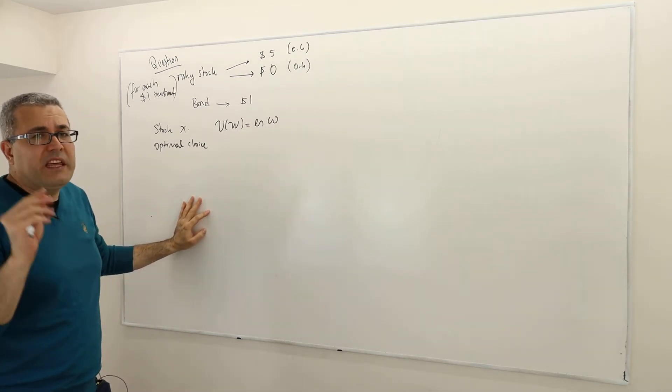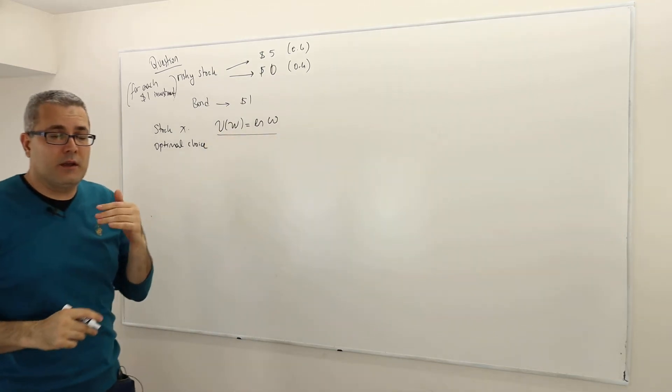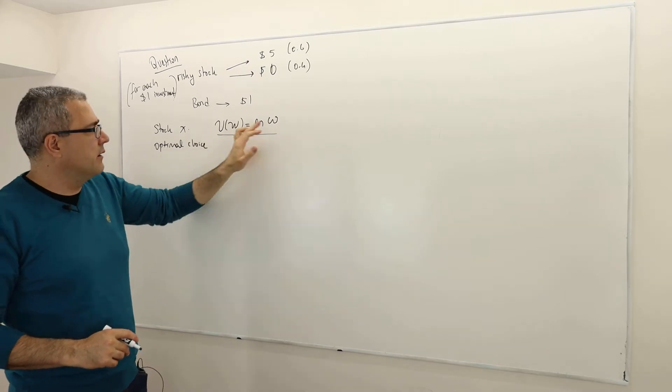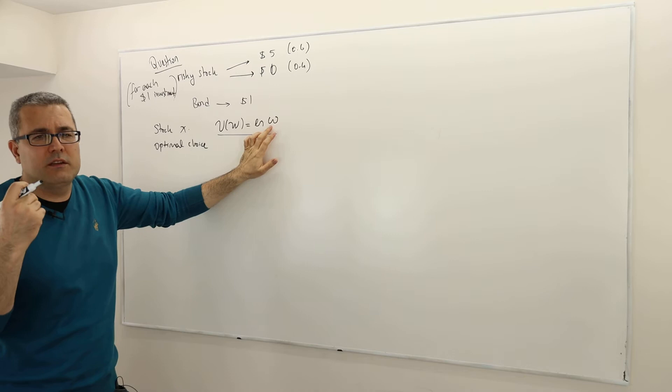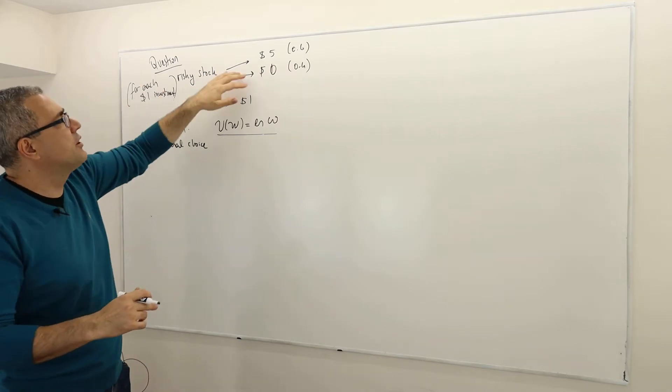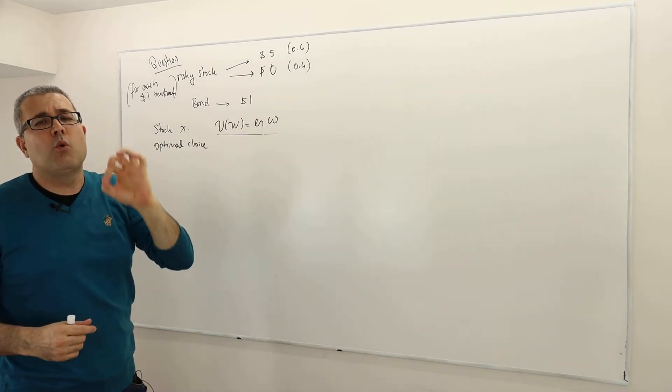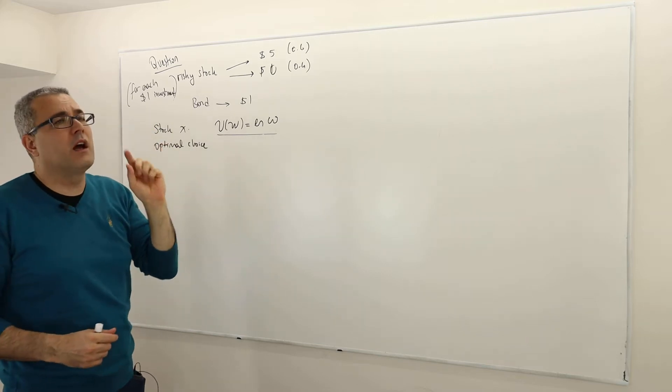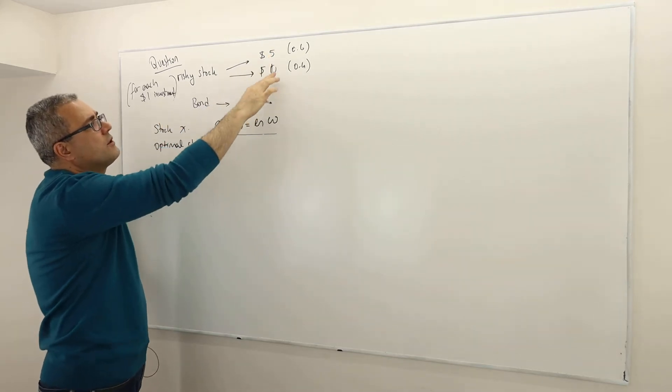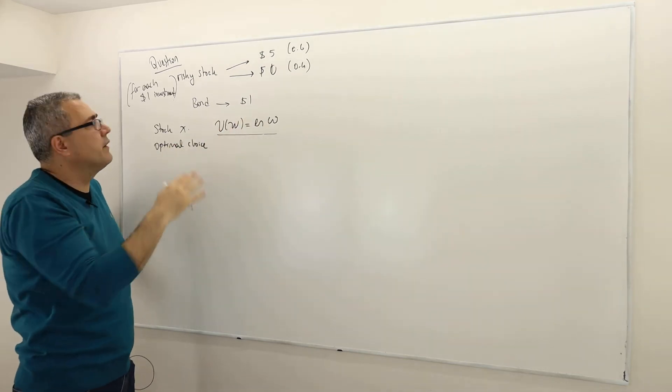So be careful. What we care about is the decision maker's final wealth because his von Neumann-Morgenstern utility function U(W) equals ln(W), where W is the realized final wealth. These numbers are what I care about. I don't care how much additional money you got or how much you lose. What I do care about is what's going to be your final wealth for each dollar you invested. Therefore, W as an outcome is either $5 or $0 if you invest in risky stock, and it's $1 for sure if invested in bond.